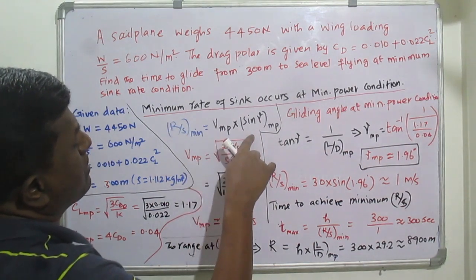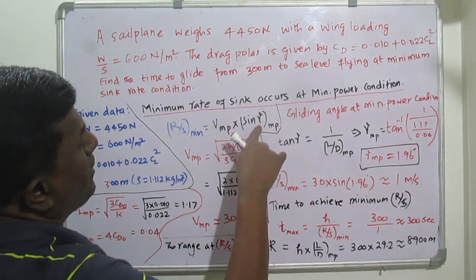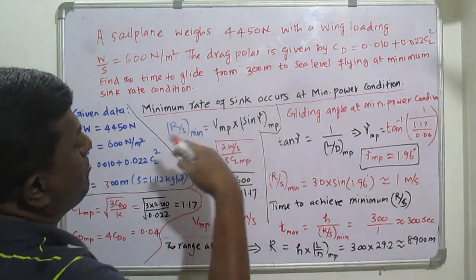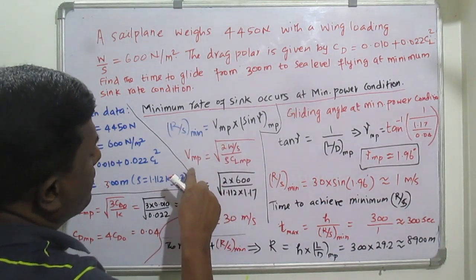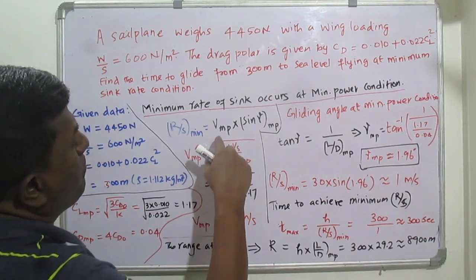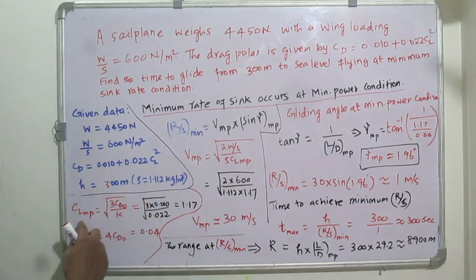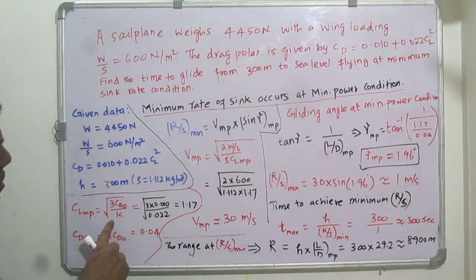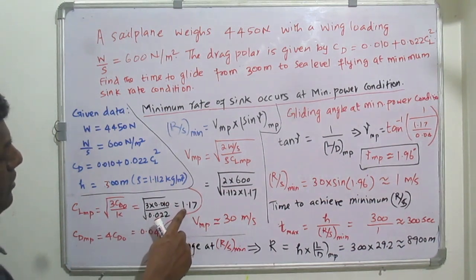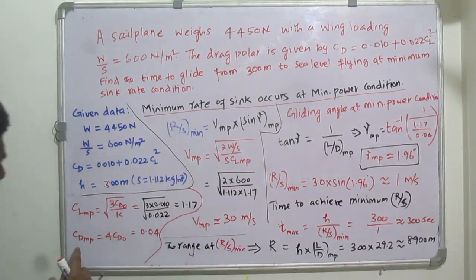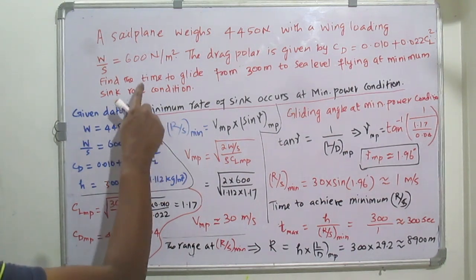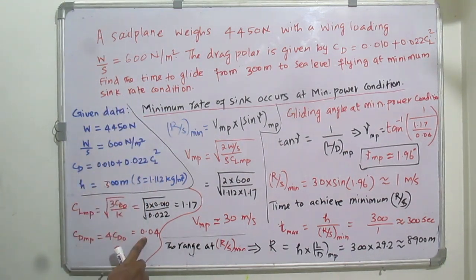We need to find both velocity and gliding angle at minimum power conditions. Starting with CL at minimum power: CL_min_power = √(3·CD₀ / k). After substituting, we get CL_min_power ≈ 1.17. Then CD at minimum power = 4 × CD₀ = 4 × 0.010 = 0.04.